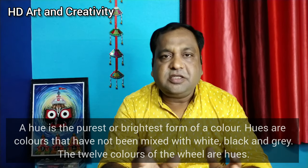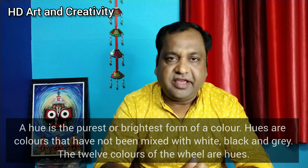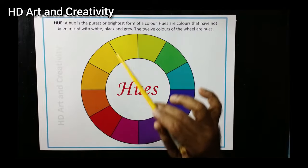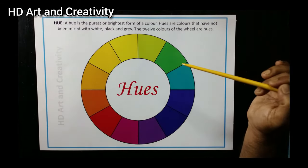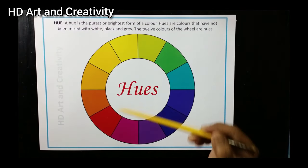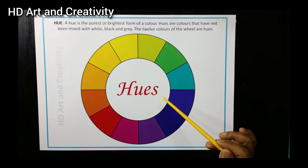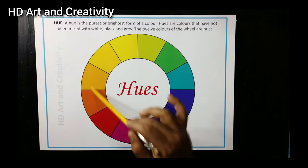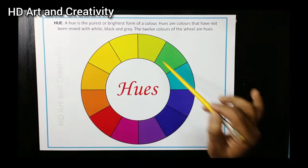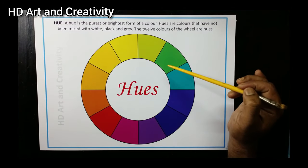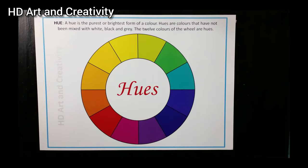Today, let's learn about hue, tint, shade, and tone. First, let's know what hue means. Hue means pure color — the colors that are pure, we call hue. The pure colors include primary colors: red, yellow, and blue. These three colors are pure. And then secondary colors and tertiary colors — all 12 colors on the color wheel are called hues.